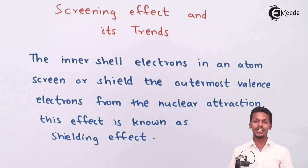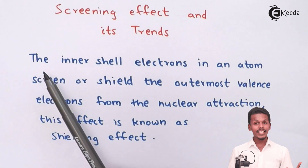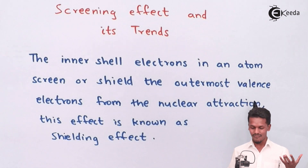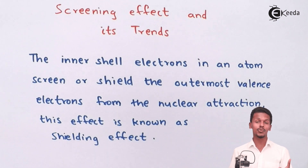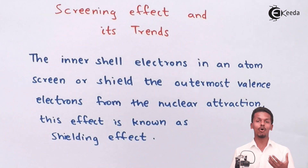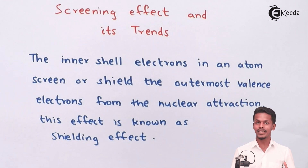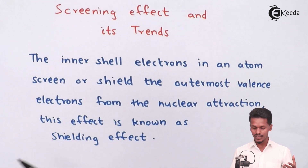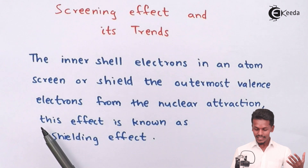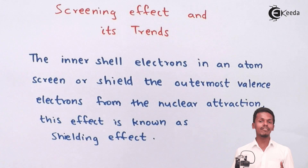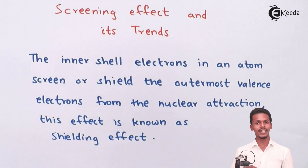Let us understand what is actually screening or shielding effect. The inner shell electrons in an atom screen or shield the outermost valence electrons — that is, the inner shell electrons actually shield or prevent the outermost electrons from the attraction of the nucleus. This effect is basically known as shielding effect or screening effect.